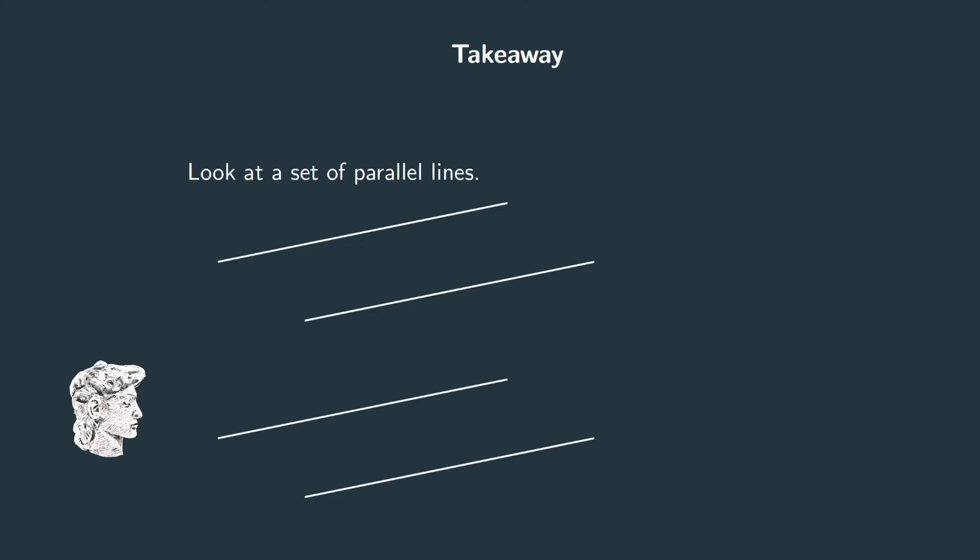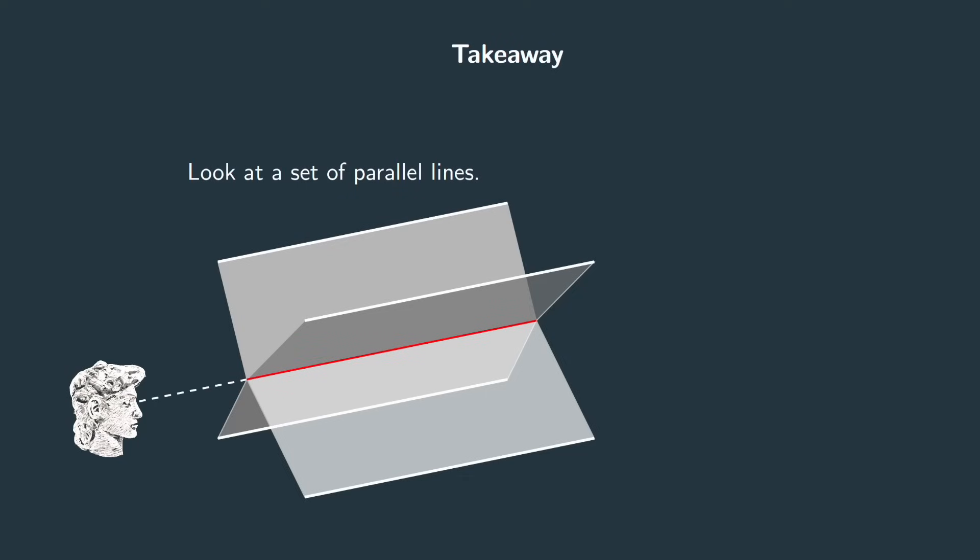So here's the takeaway. Look at a set of parallel lines. You have a line of sight that's parallel to them. Those parallel lines and your line of sight form a set of intersecting planes that you'd see as intersecting lines. So you see the parallel lines that lie on those planes as converging to a vanishing point.